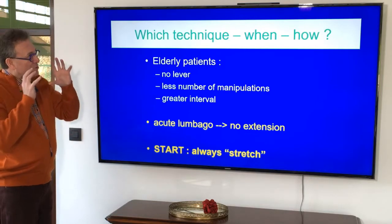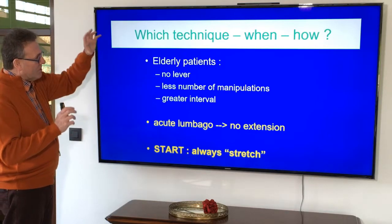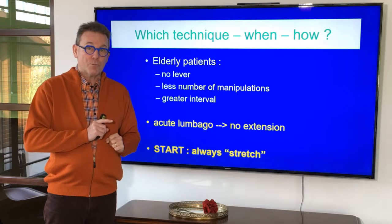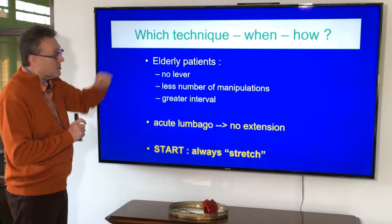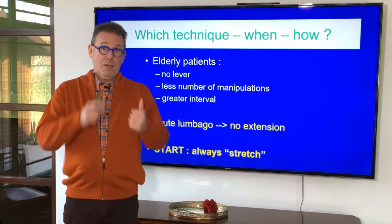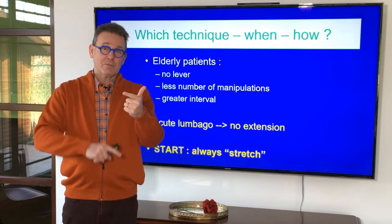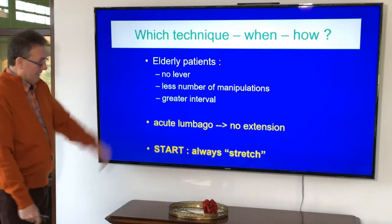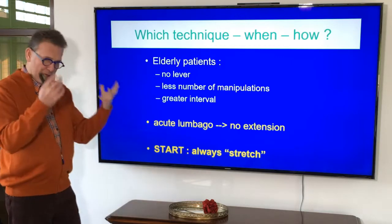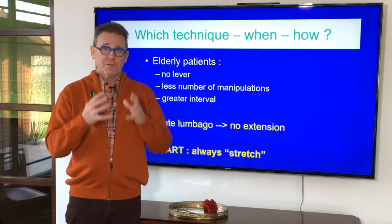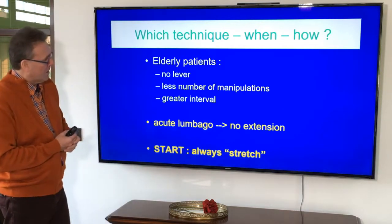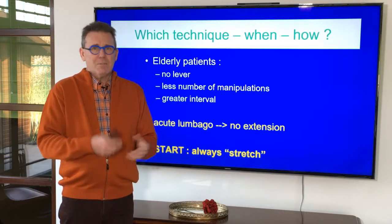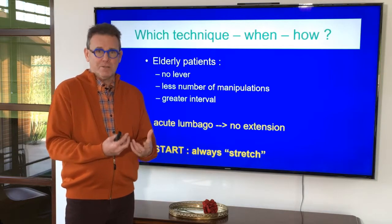First, some general rules. With elderly patients or patients suffering from osteoporosis, don't do any techniques with the lever — so leg over, Dallison, reverse stretch with femur — forbidden. Keep a lesser number of manipulations per session; empirically, no more than four maneuvers. And use a greater interval between sessions — perhaps the patient comes back in two days, depending on the irritability of the patient.